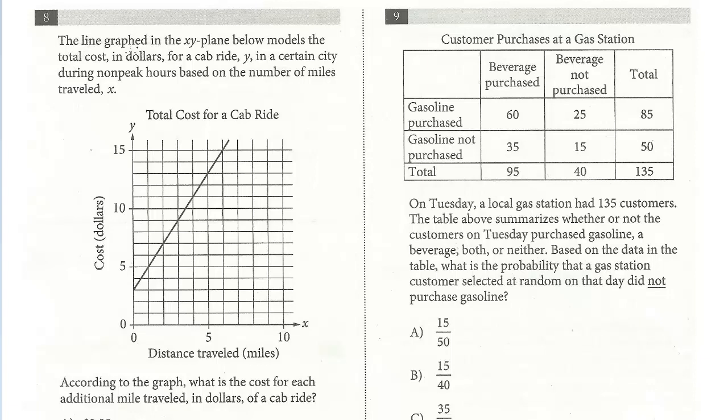The line graphed in the XY plane below models the total cost in dollars for a cab ride Y in a certain city during non-peak hours based on the number of miles traveled. According to the graph, what is the cost for each additional mile traveled in dollars of a cab ride?